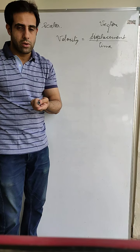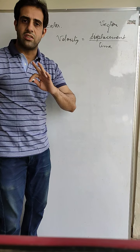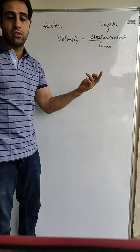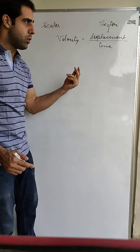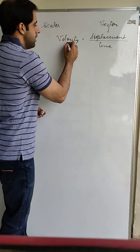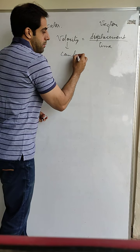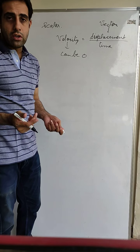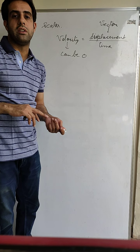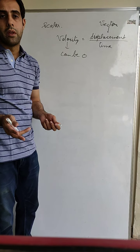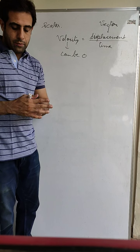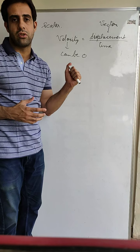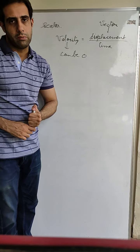Distance can never be equal to zero if the body is moving. But displacement can be equal to zero — as in the case of circular path motion. That means velocity can be zero even when speed is not zero. This is another point of differentiation between speed and velocity. That is all for today — do the solved examples and exercise questions based on these topics and send me your problems. Thank you.